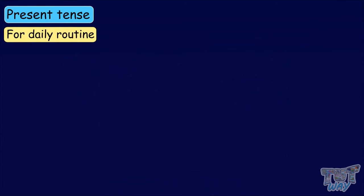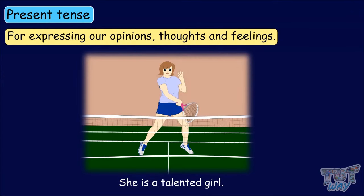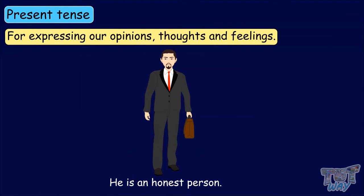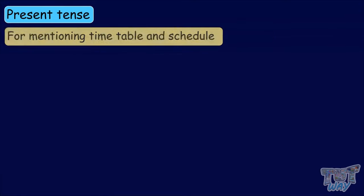We always use present tense for expressing our opinions, thoughts and feelings. For example: 'We should always respect others.' 'She is a talented girl.' 'He is an honest person.' All these sentences express opinions, thoughts and feelings, so they are always expressed in present tense. Timetables and schedules are also expressed in present tense.